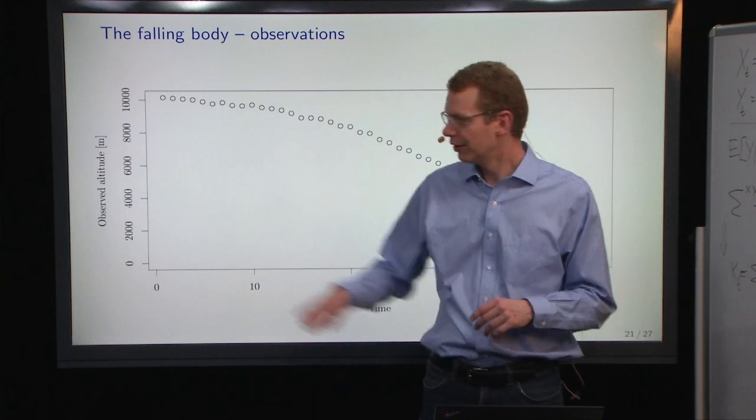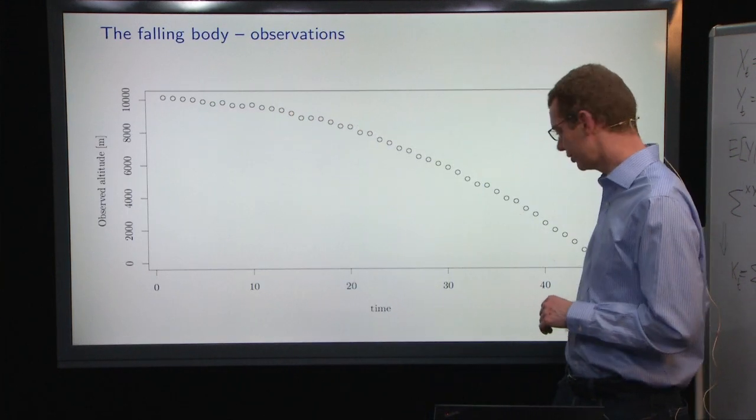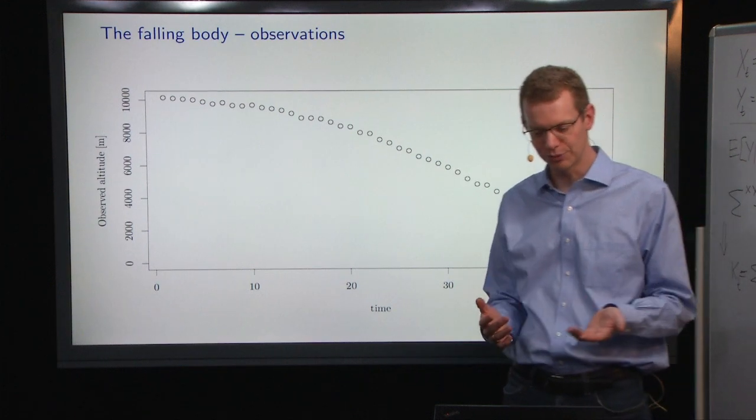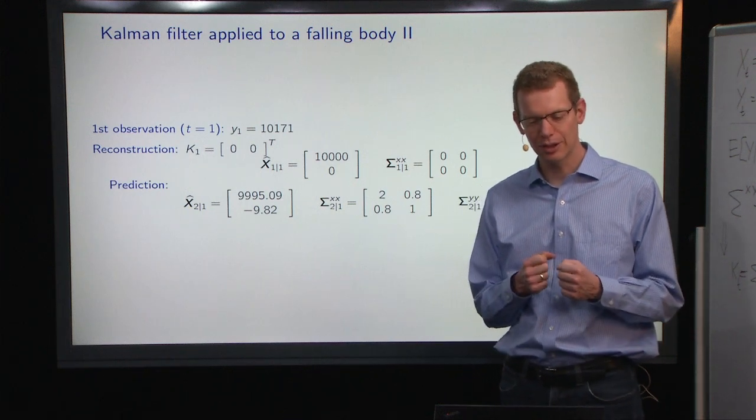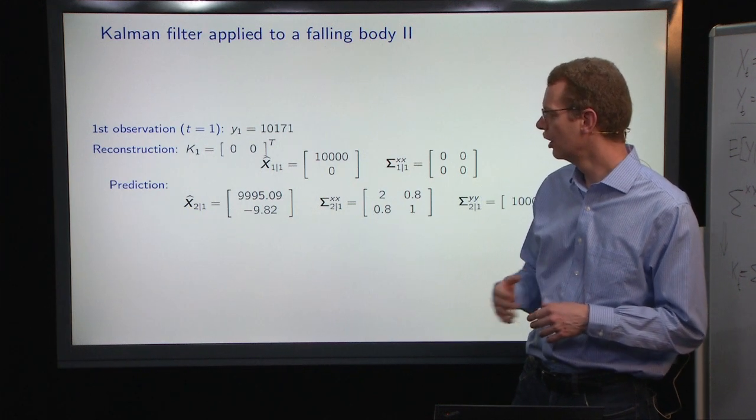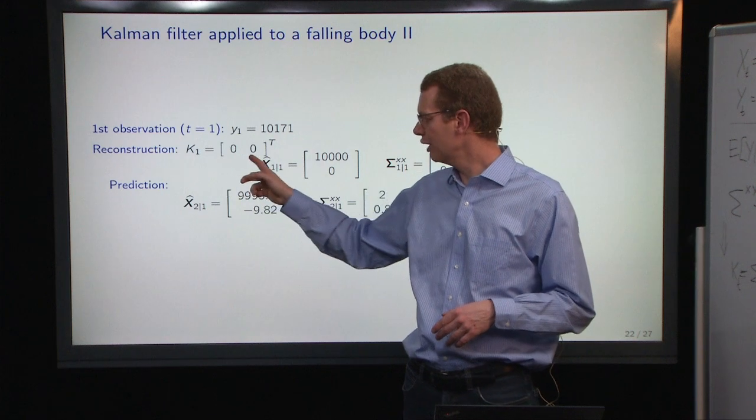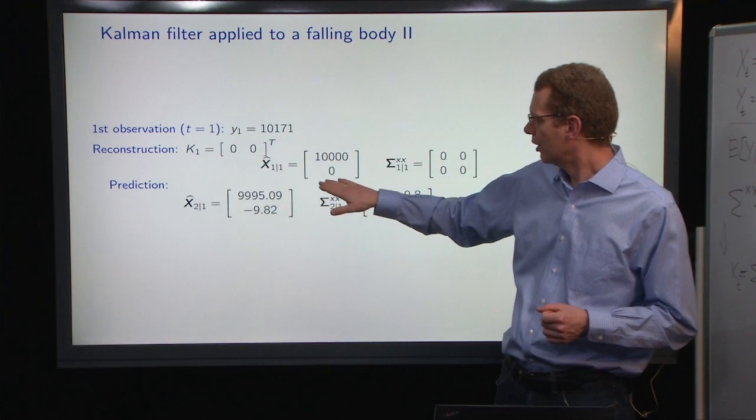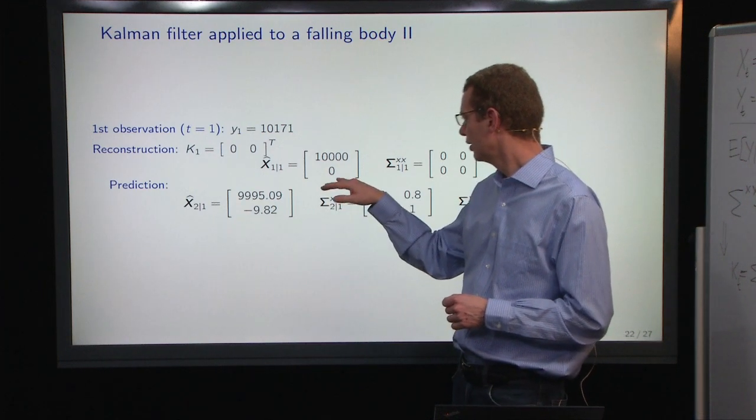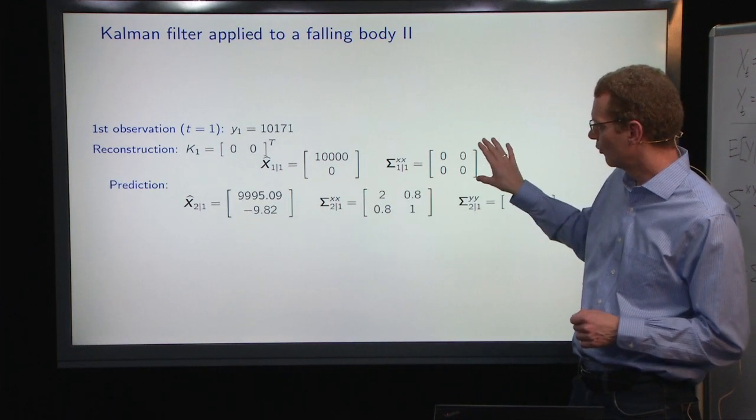You can see one such simulation, what happens and what is observed. What we have to do is take one step at a time from the initial conditions. We assume that we knew everything exactly so the Kalman gain will be zero. We have this prediction that we are at 10,000 meters with no covariance.